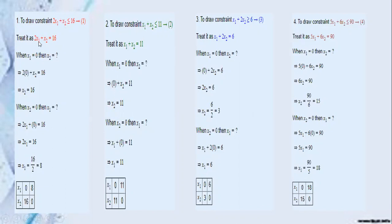Then substitute x1 equals 0 and find the value of x2, then substitute x2 equals 0 and find the value of x1. You will be getting coordinates (0,16) and (8,0) for the first constraint, (0,11) and (11,0) for the second, (0,3) and (6,0) for the third constraint, and (0,15) and (8,0) for the fourth constraint.